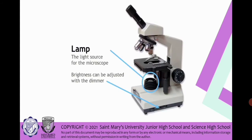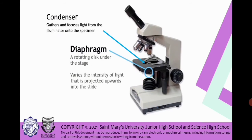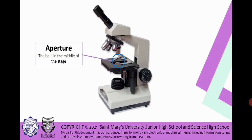Next we have the lamp. This is the light source for the microscope and the brightness can be also adjusted with dimmer. Next part is we have the condenser. This gathers and focuses the light from the illuminator onto the specimen. We have also diaphragm that is rotating disc under the stage. You can look at this example wherein it varies the intensity of light that is projected upwards into the slide.